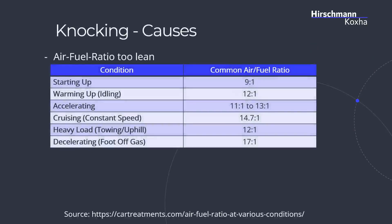What causes knocking? Most of the time, a very common problem with not well-done tunes is that the air-fuel ratio itself is too lean. The table below shows certain conditions and the air-fuel ratio. An air-fuel ratio of 9:1 means we have 9 components of air and 1 component of fuel. During deceleration, we have 17:1, which is really lean, while during startup it's 9:1 — pretty rich. During load, we need to increase the amount of fuel to keep our temperatures low in the cylinder.